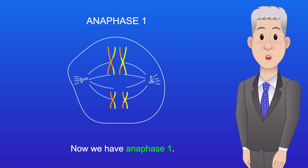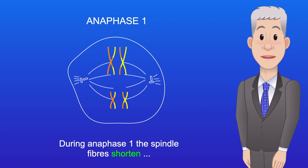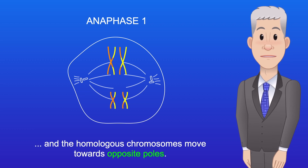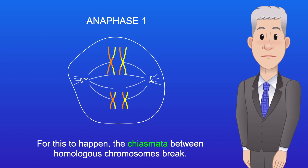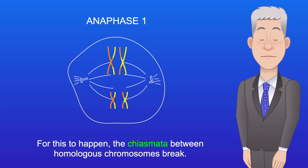Now we have anaphase I. During anaphase I, the spindle fibres shorten and the homologous chromosomes move towards opposite poles. For this to happen, the chiasmata between homologous chromosomes break.